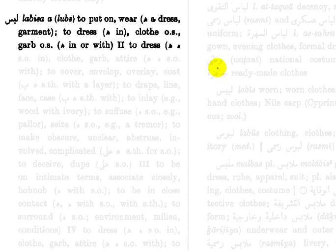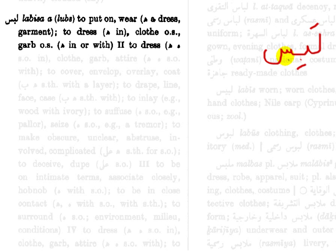So here we have the entry: the lam, the ba, and the sin. Let's write this out — lam, ba, and then the sin. This is actually the past tense verb. We have the lam denoted by the letter L, the ba denoted by B, and the sin denoted by S. In between we have the A, the I, and then the A again. These denote the actual harakaat on the past tense verb: la-bi-sa. So there's a fatha, a kasra, and a fatha.